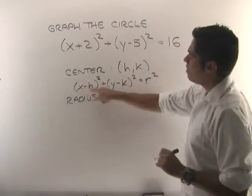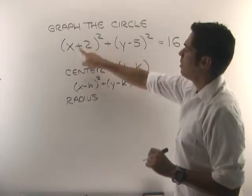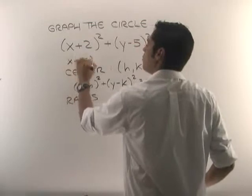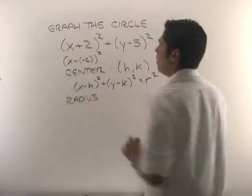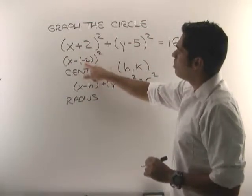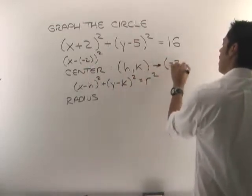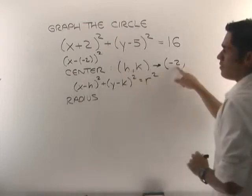So here we have minus h, here we don't have a minus, but we could rewrite that as being x minus negative 2 squared. So therefore, negative 2 is the h. So our center so far has the x coordinate or the h here is negative 2.